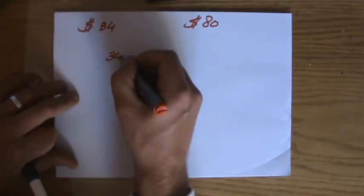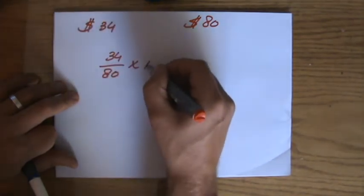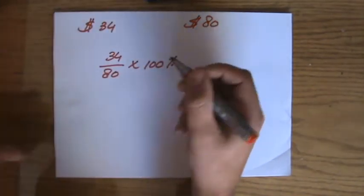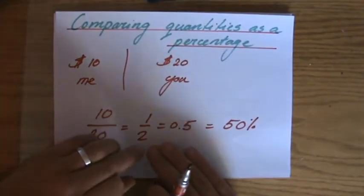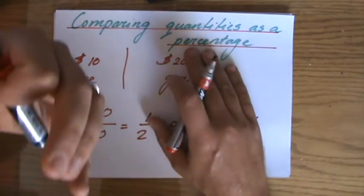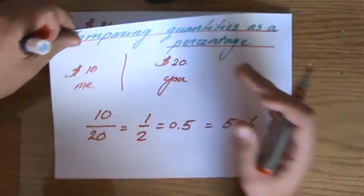Then I do my pocket money over the other person's pocket money, and then I'll times that by 100%, because I do not want to give my answer as a fraction or as a decimal. No, I want to give it as a percentage, so I multiply it by 100%.